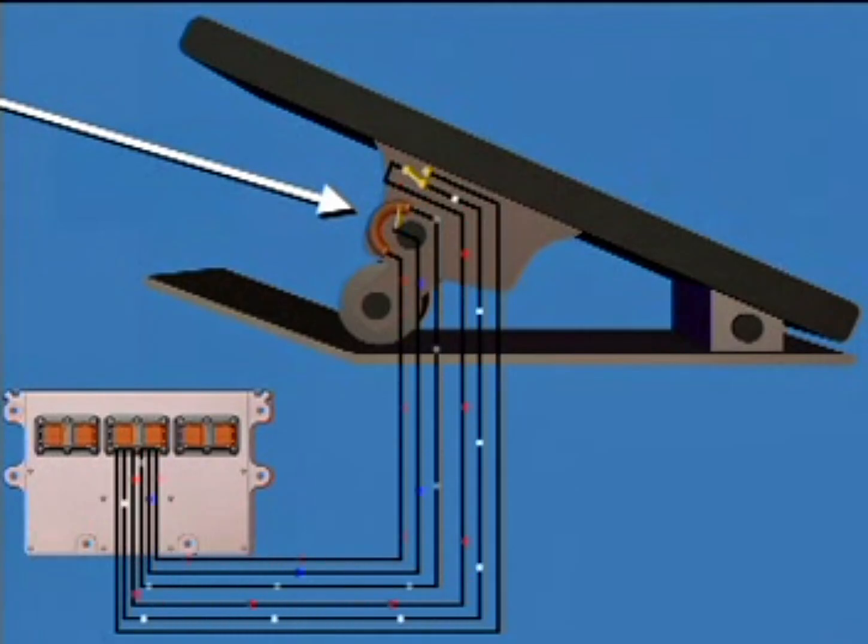The accelerator position sensor is another variable resistance three-wire sensor. However, the variable resistor is a sliding contact-type resistor connected to the accelerator pedal. The accelerator not only contains a position sensor but may also have an idle validation switch incorporated into it. This is a safety redundancy check to help ensure that the accelerator is not malfunctioning. The accelerator position sensor and the idle validation circuits work together.